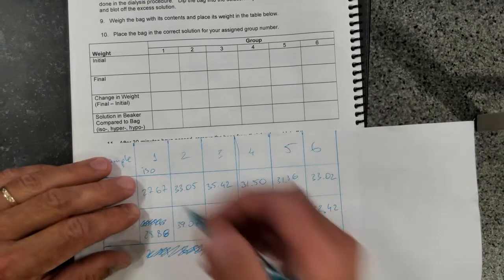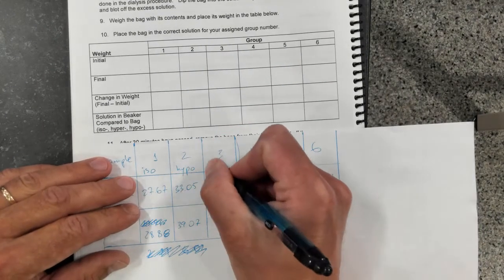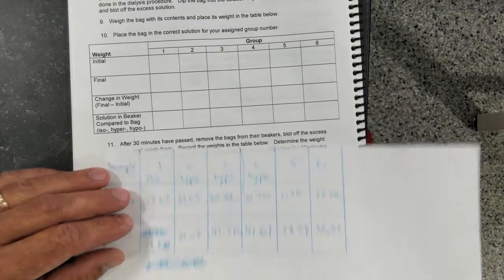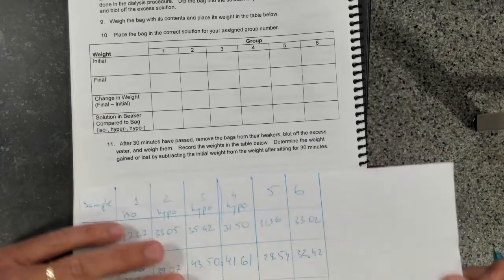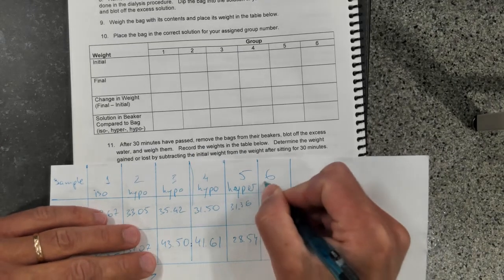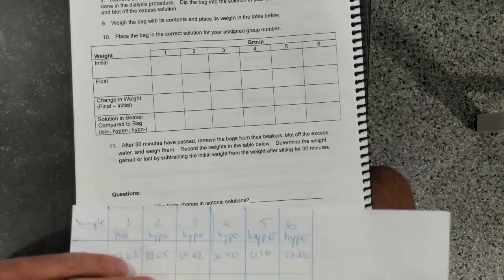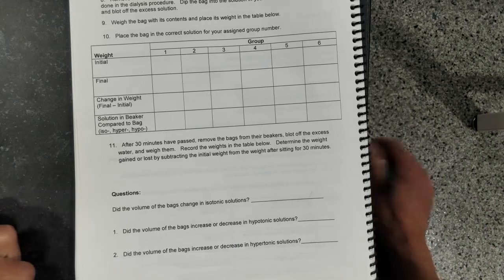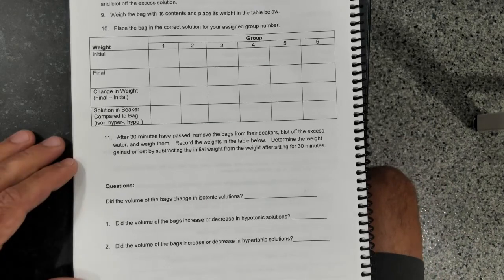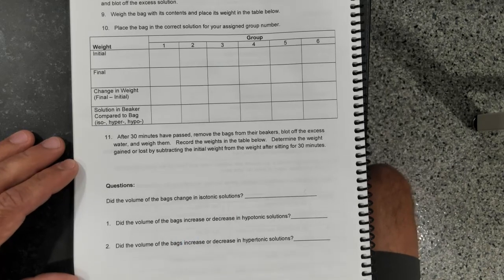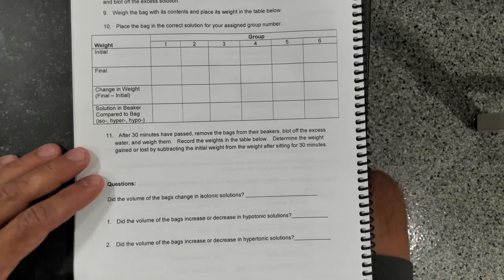Progressively had hypotonic bags that were in the hypotonic solutions, and then bags were in hypertonic solutions. Those are the last two samples. And then based on the results that I just demonstrated to you, you answer these questions and you submit the lab.